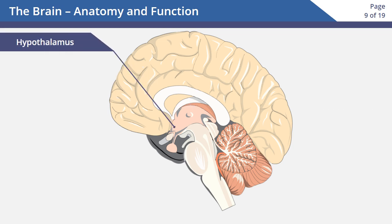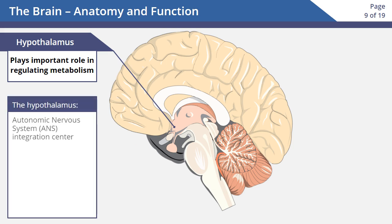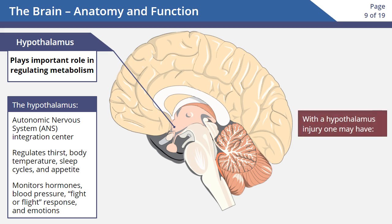The hypothalamus is a very small region in the brain. Even though it's so small, it plays an important role in regulating our metabolism and is the autonomic nervous system integration center. It regulates our thirst, body temperature, sleep cycles, and appetite. It also monitors our hormones, blood pressure, fight-or-flight response, and our emotions.